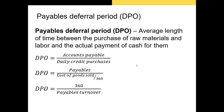The payables deferral period, or DPO, is the average length of time between the purchase of raw materials and the actual cash payment for those materials. Typically we take accounts payable and divide that by daily credit purchases — or just cost of goods sold divided by 360. Alternatively, 360 divided by the payables turnover ratio. Now let's apply these numbers using a real example.